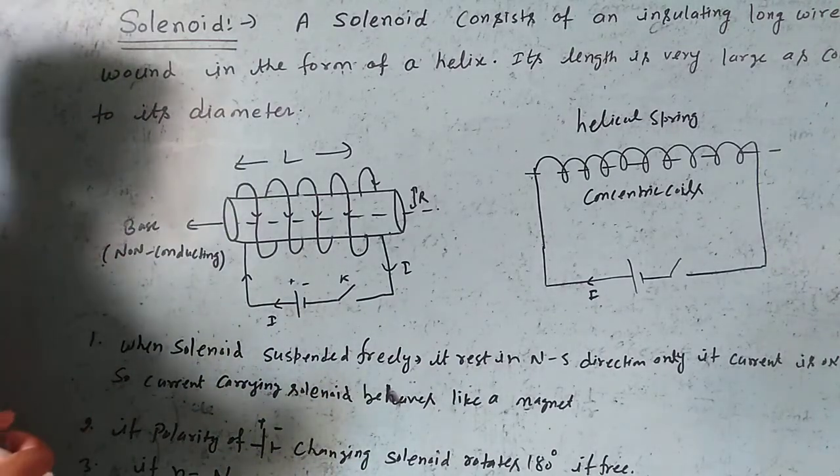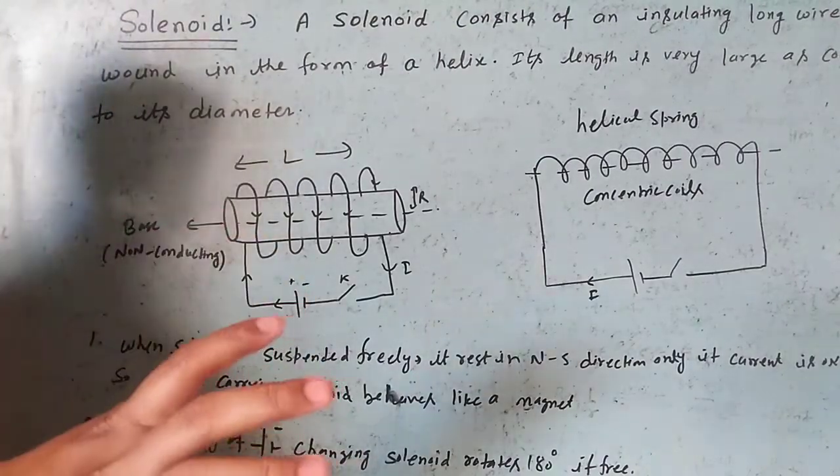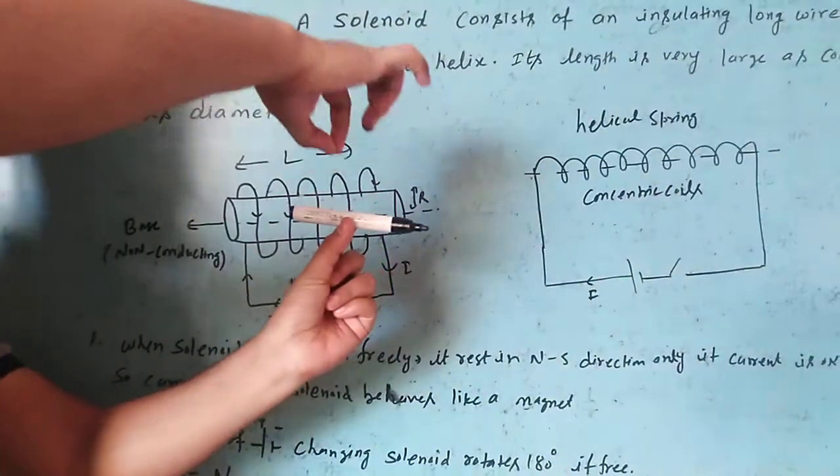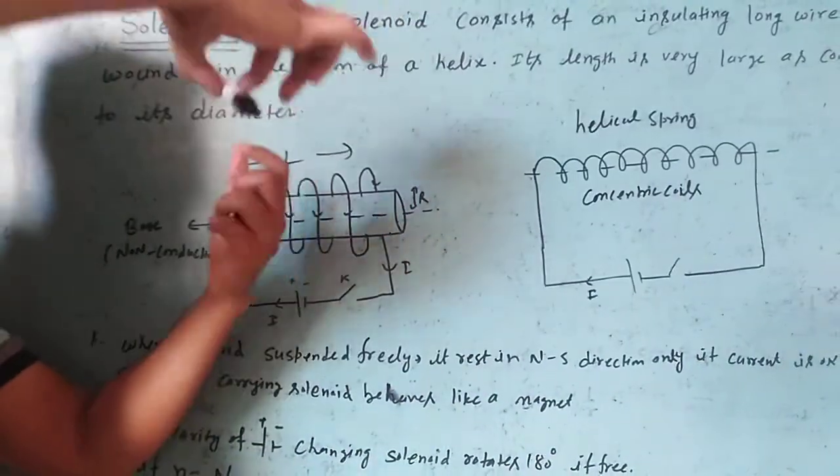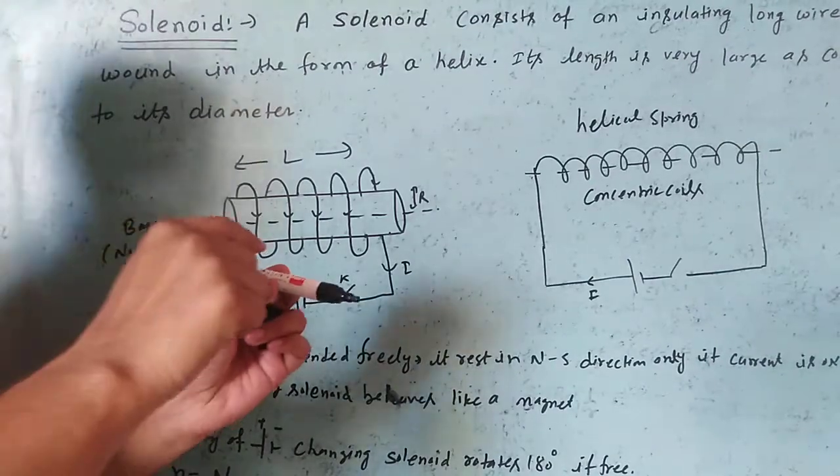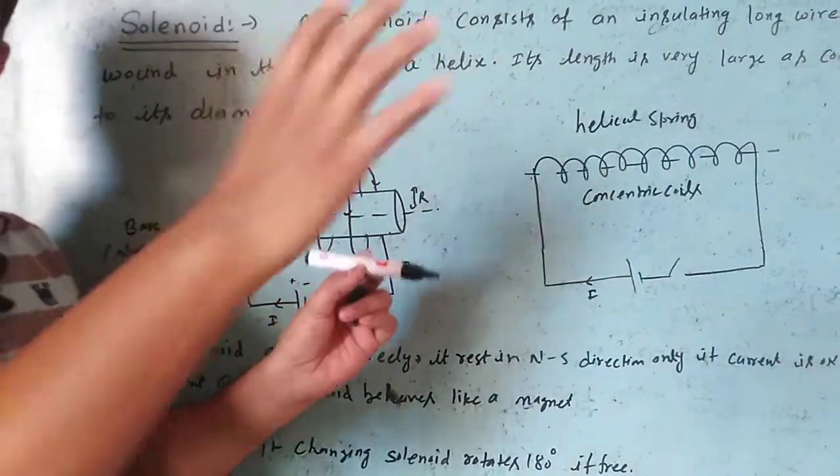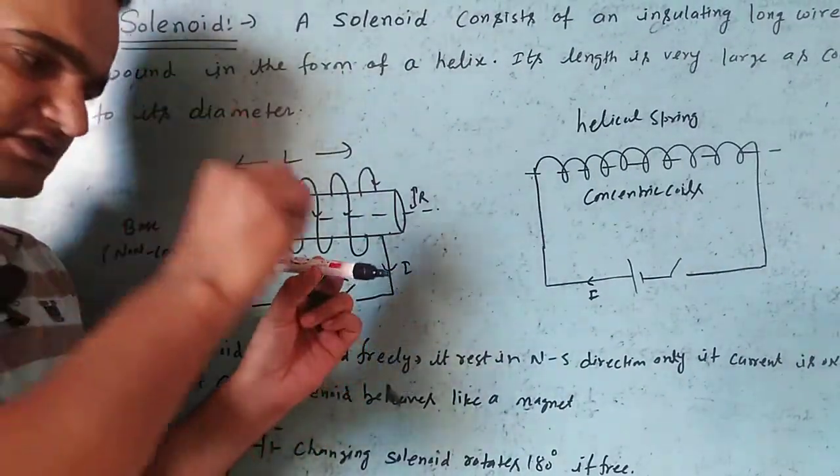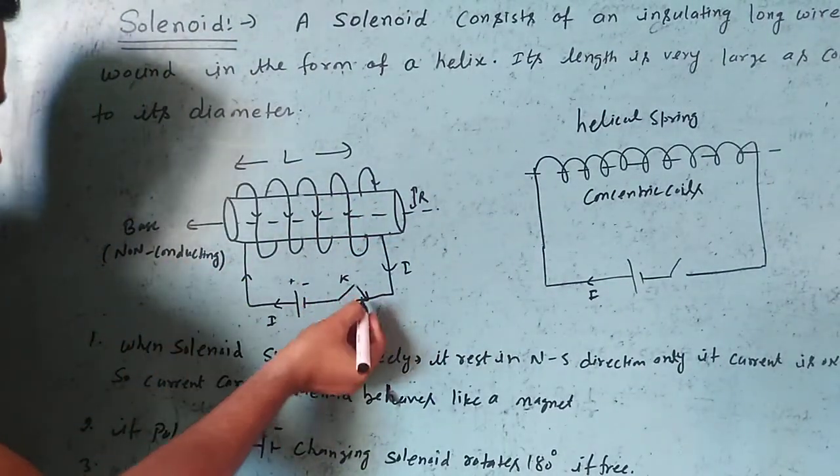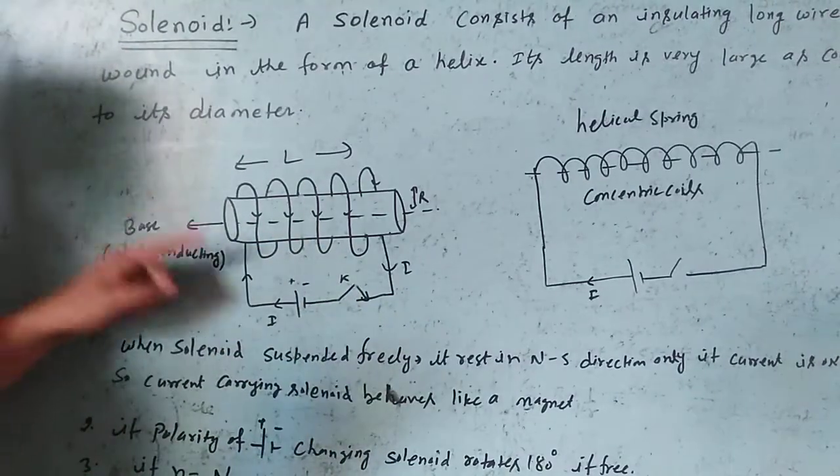Now, basic points of solenoids: If any solenoid is suspended, it rests in the north-south direction only when current is on.